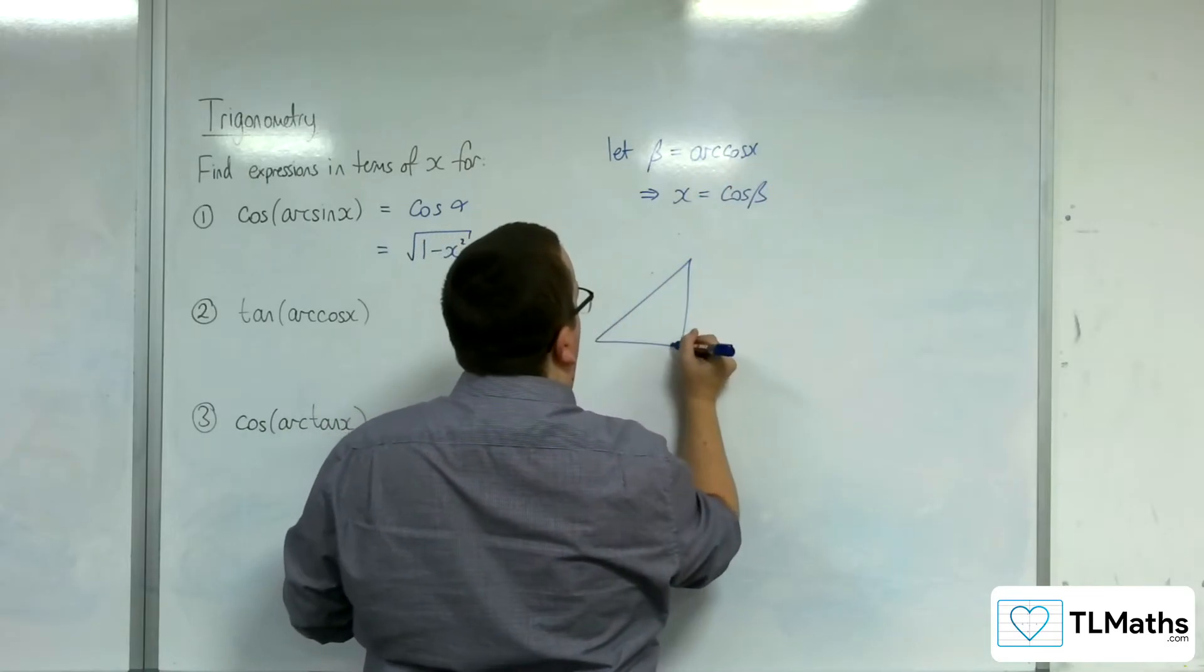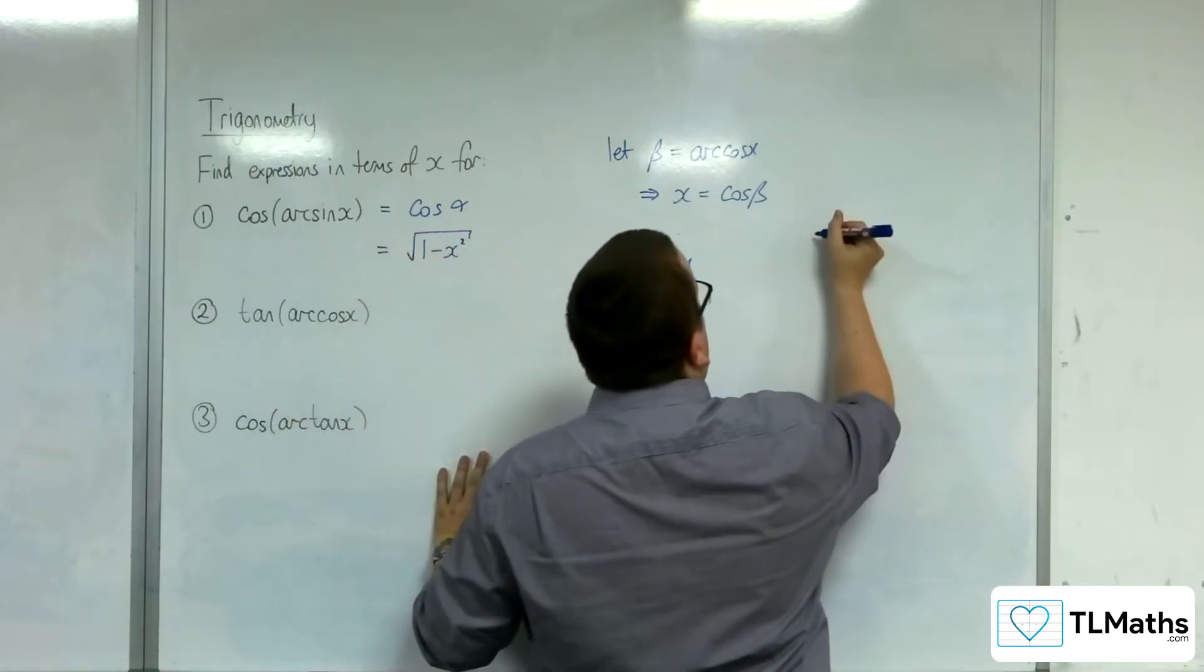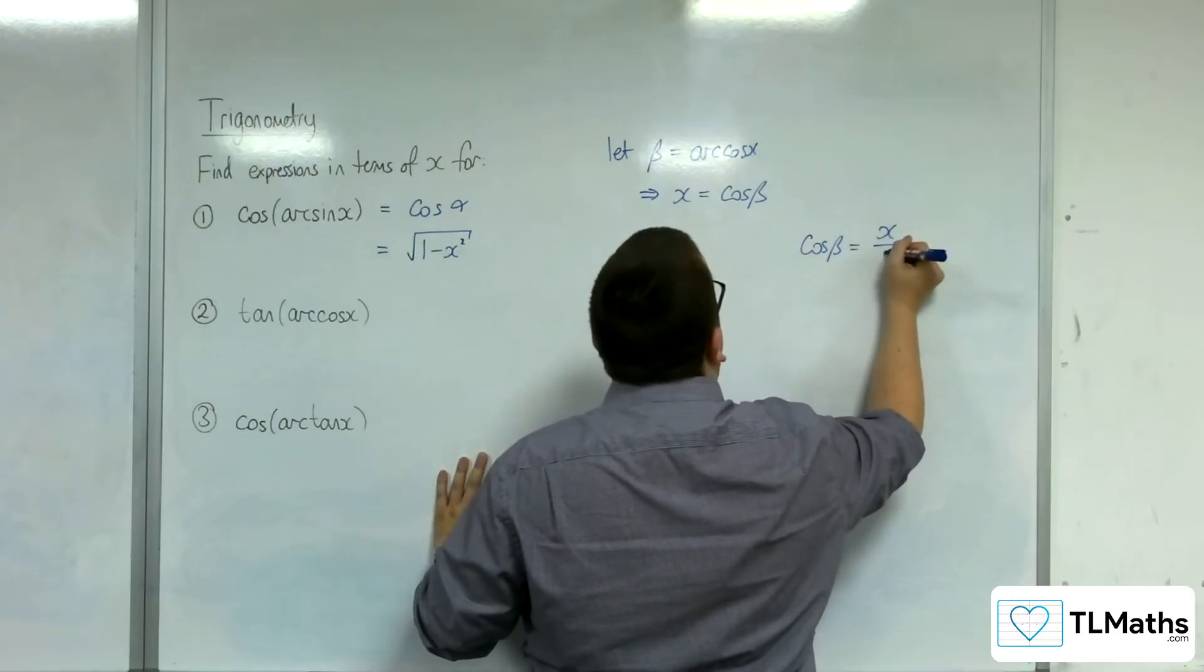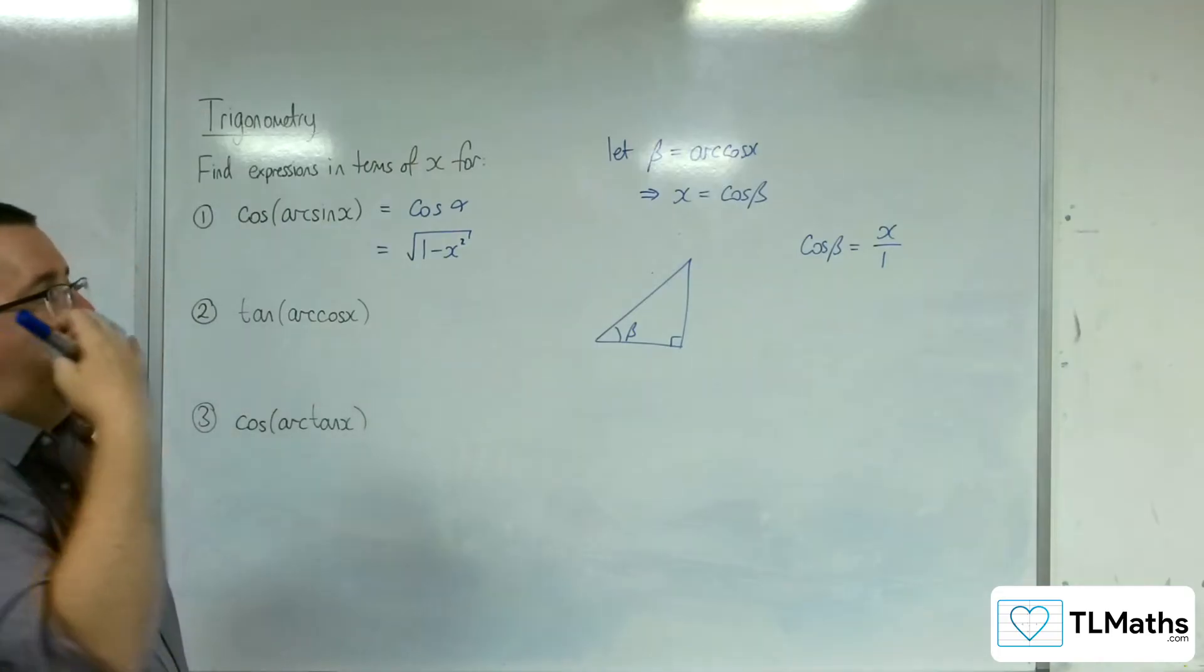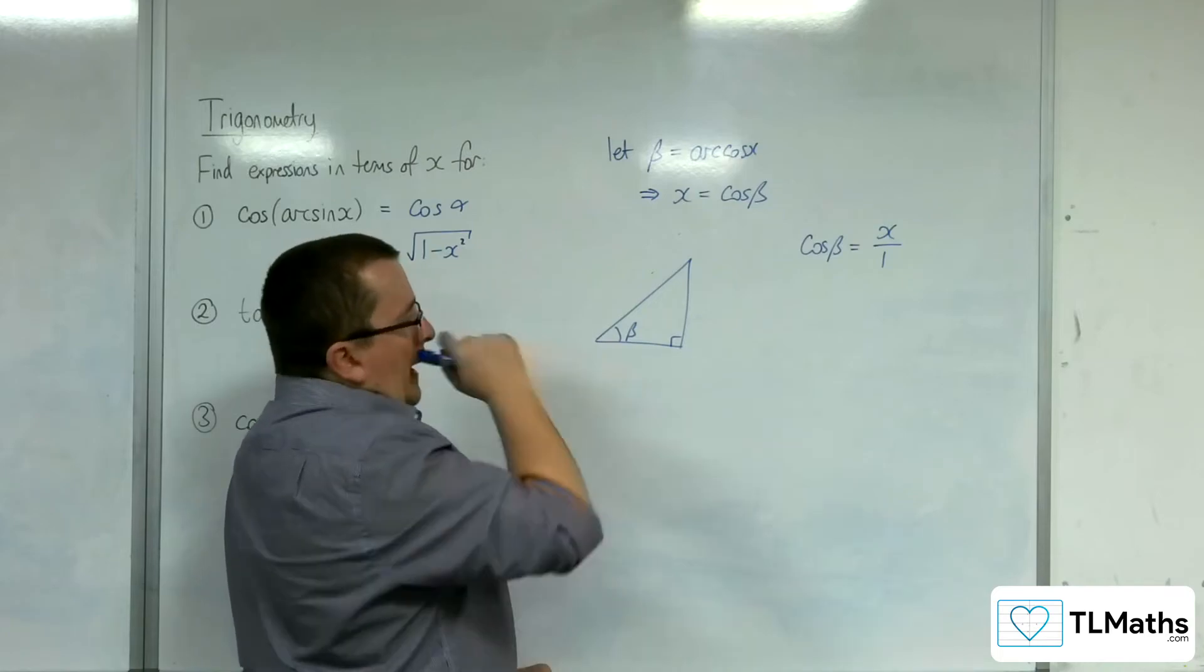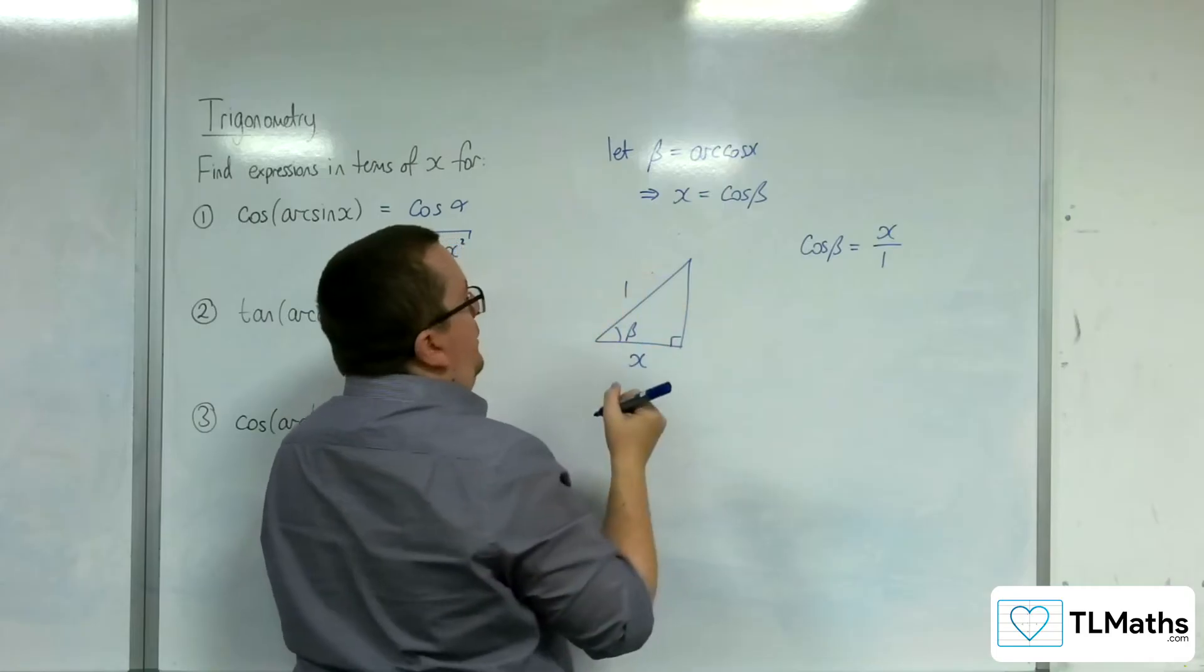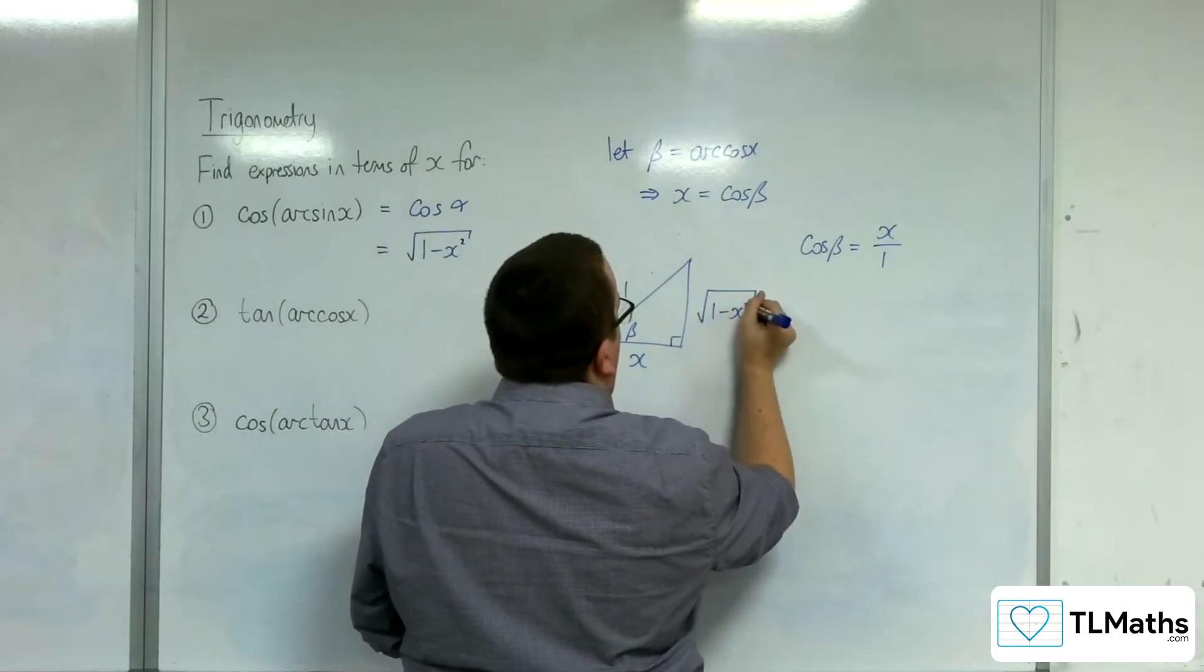Right, let's draw a right angle triangle. There's my angle beta. So if cosine beta is equal to x, we can write that as x over 1. We know that cosine using SOHCAHTOA is adjacent over hypotenuse. So if the adjacent side is x, the hypotenuse is 1, then the missing side is square root of 1 minus x squared.